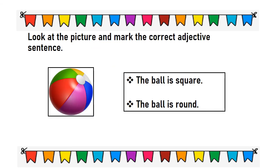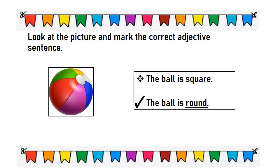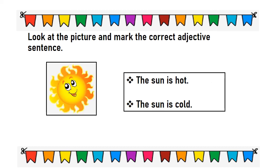Look at the picture and mark the correct adjective sentence. The ball is square or the ball is round? The correct adjective is the ball is round. The sun is hot or the sun is cold? The sun is hot.